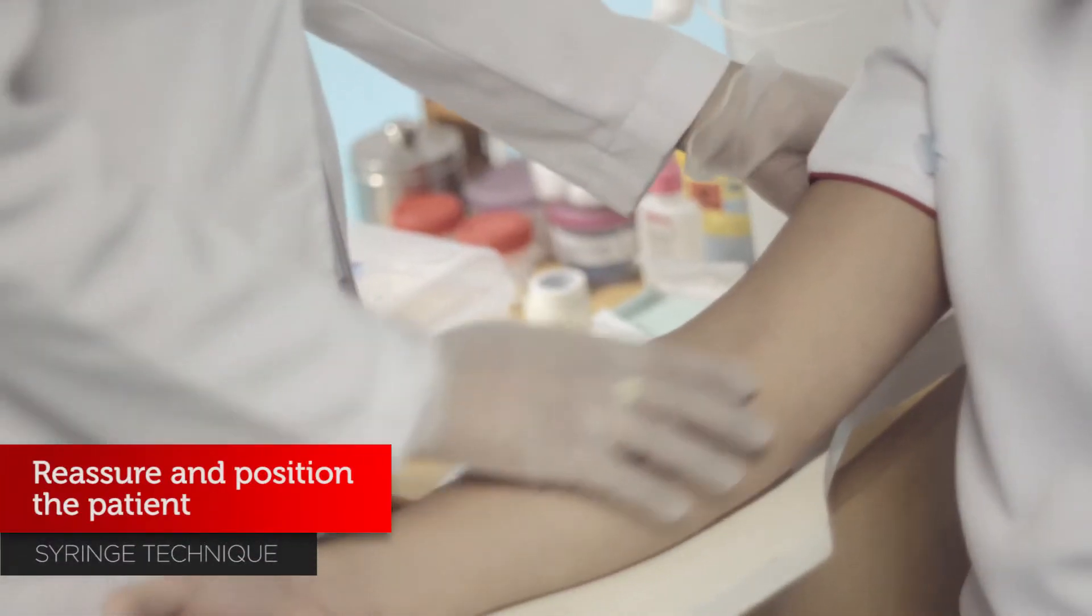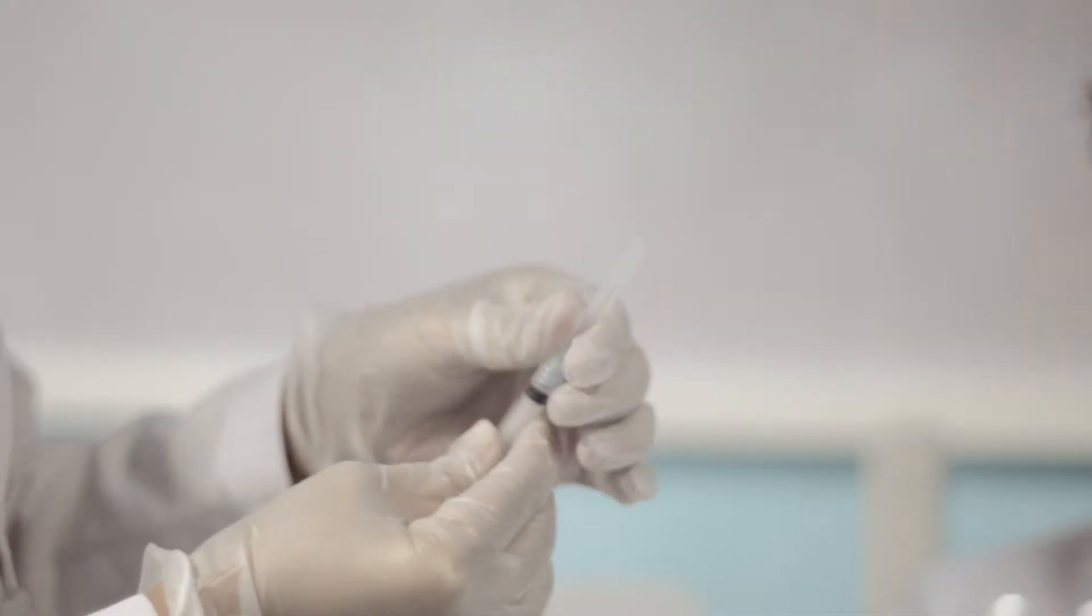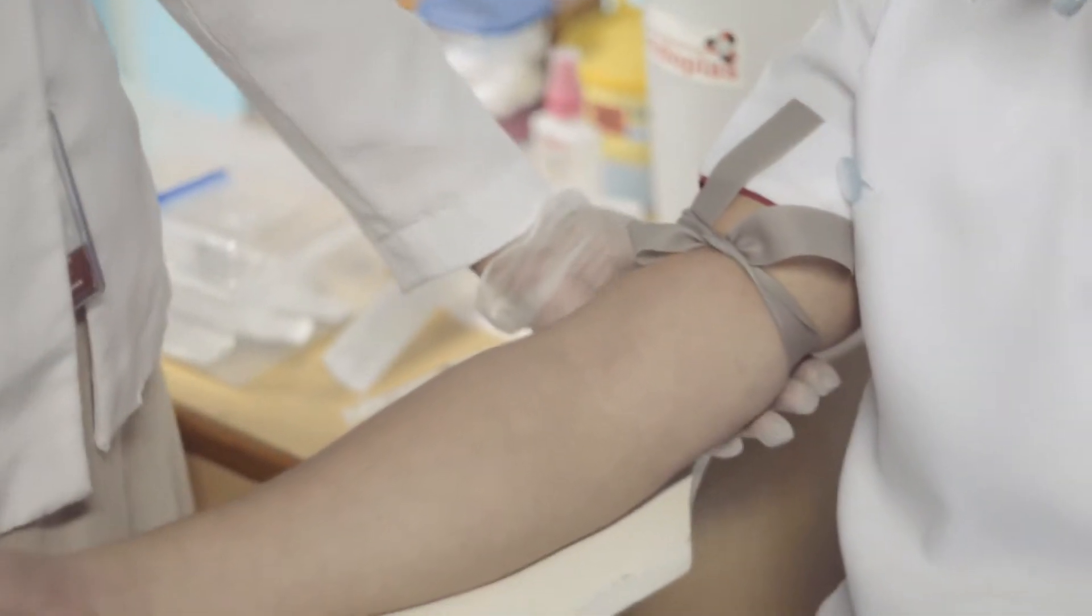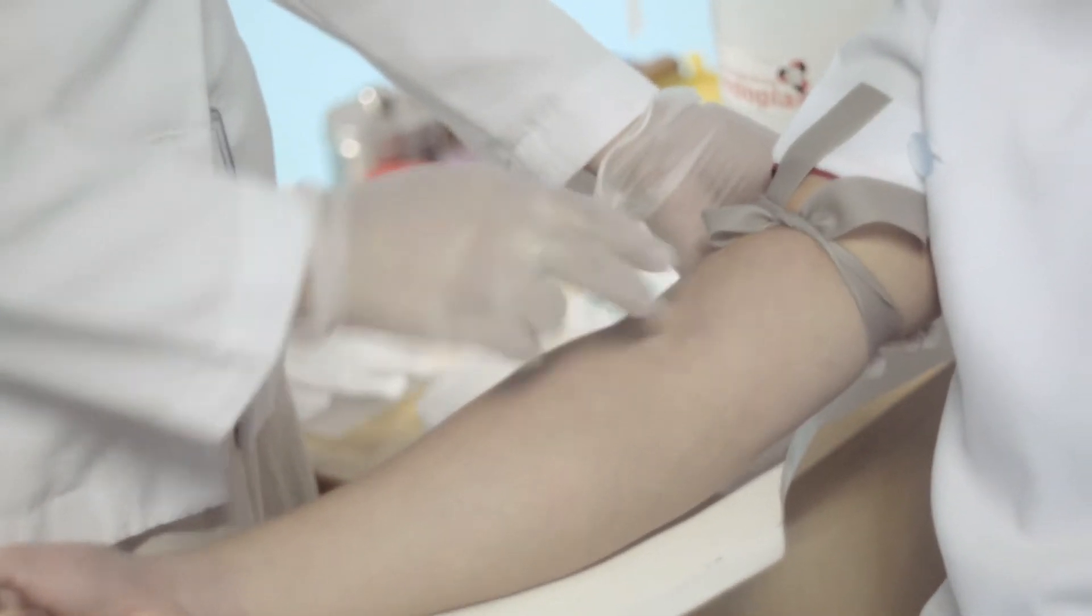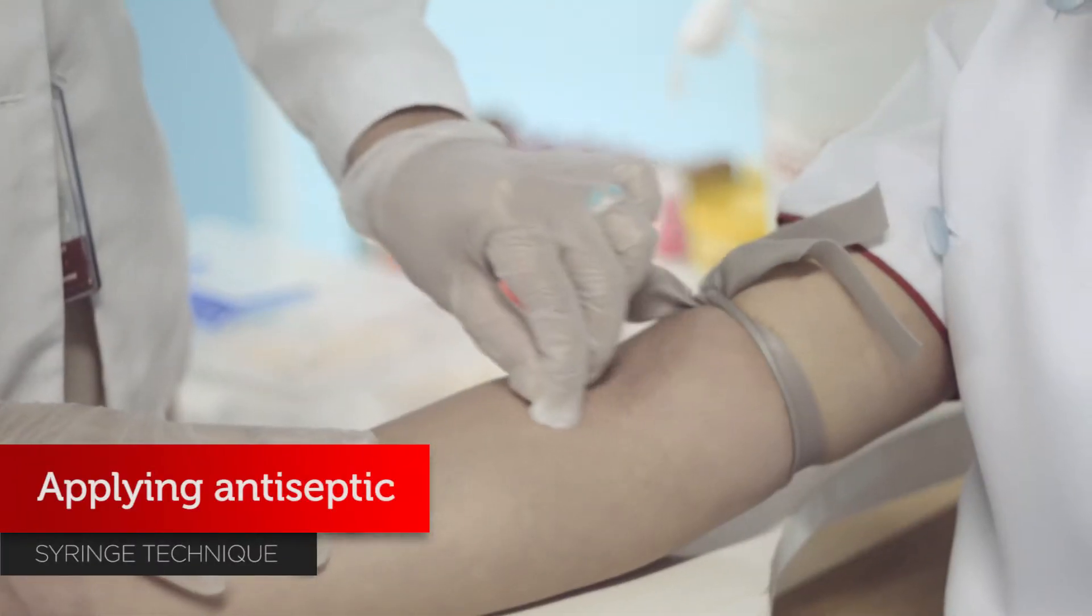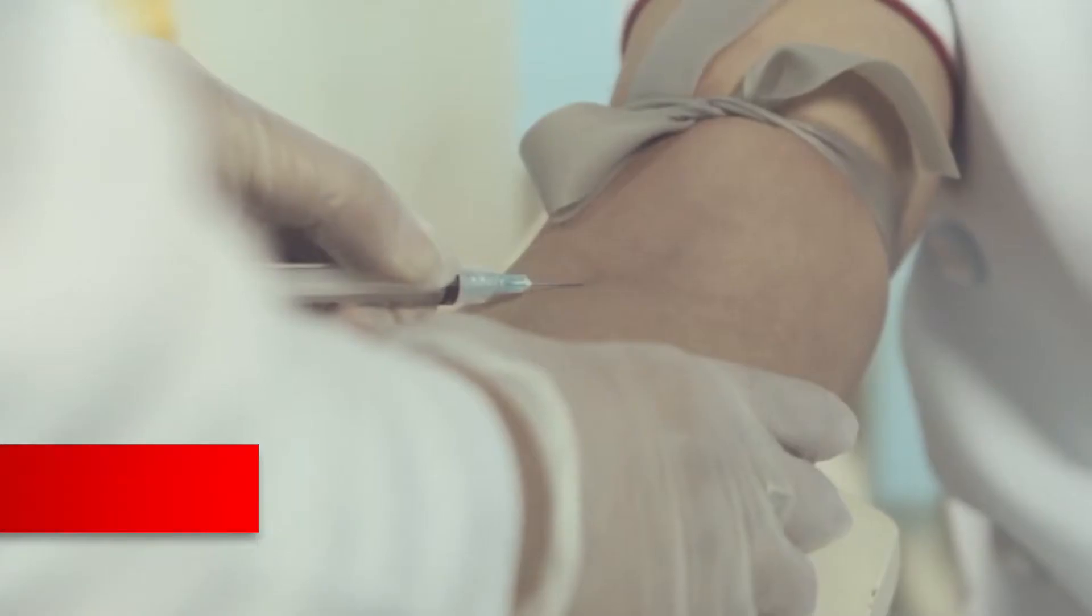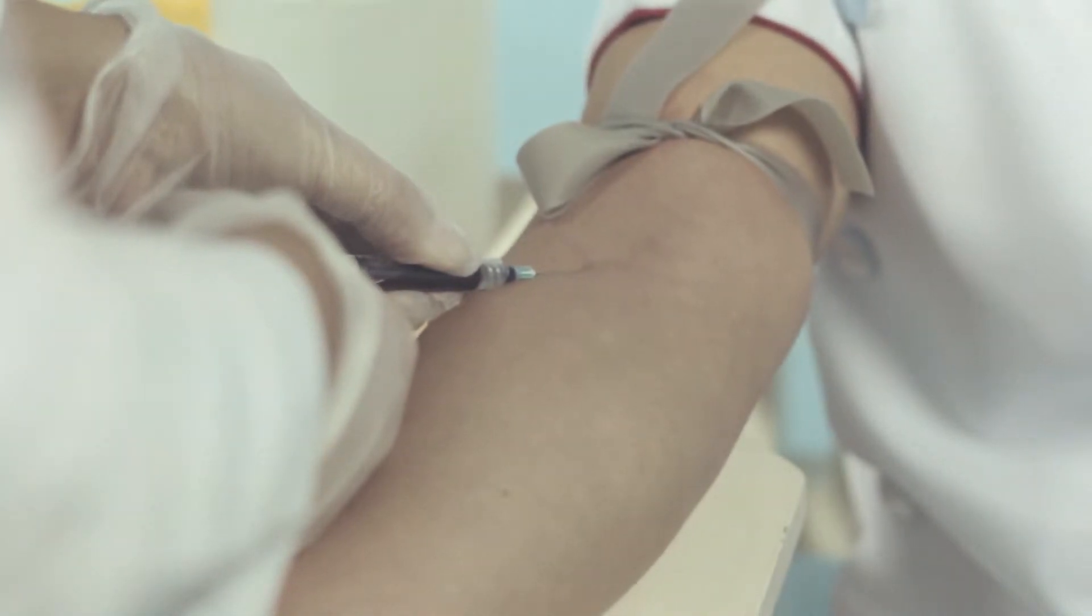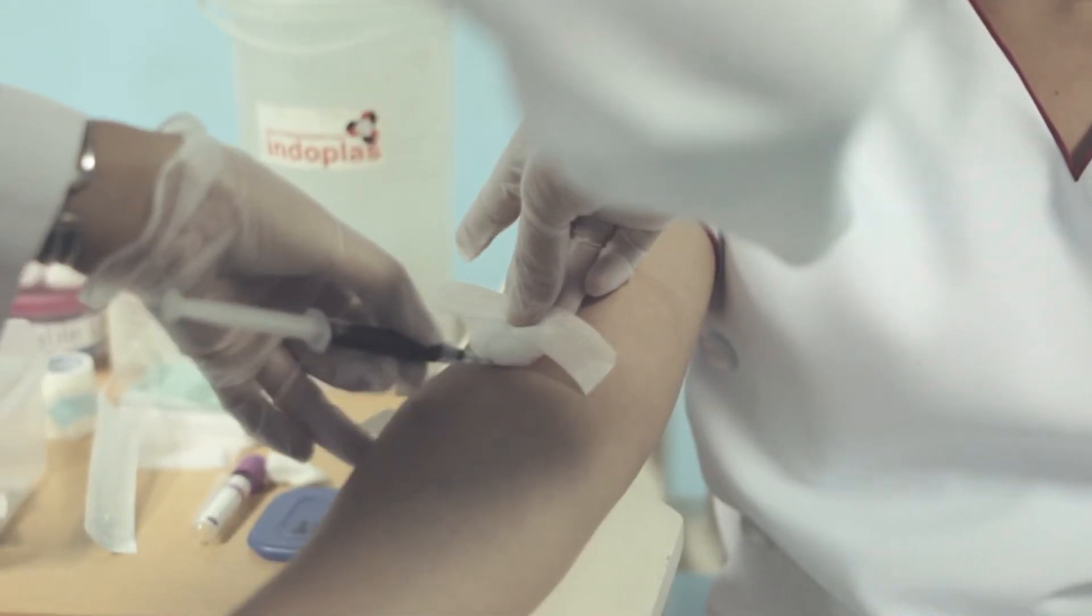Reassure and position the patient. Preparation of the needle and syringe. Applying the tourniquet. Selecting the vein. Applying antiseptic. Inserting the needle. Withdrawing the blood. Releasing the tourniquet.